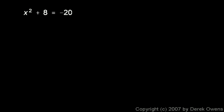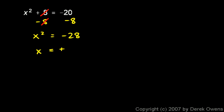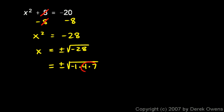Here's another one: x² + 8 = -20. To solve for x we need to get rid of that 8, so we subtract 8 from both sides. That leaves us with x² on the left and -28 on the right. Then to isolate x we take the square root of both sides, leaving x on the left and on the right we have plus or minus the square root of negative 28. I think of -28 as being -1 times 4 times 7.